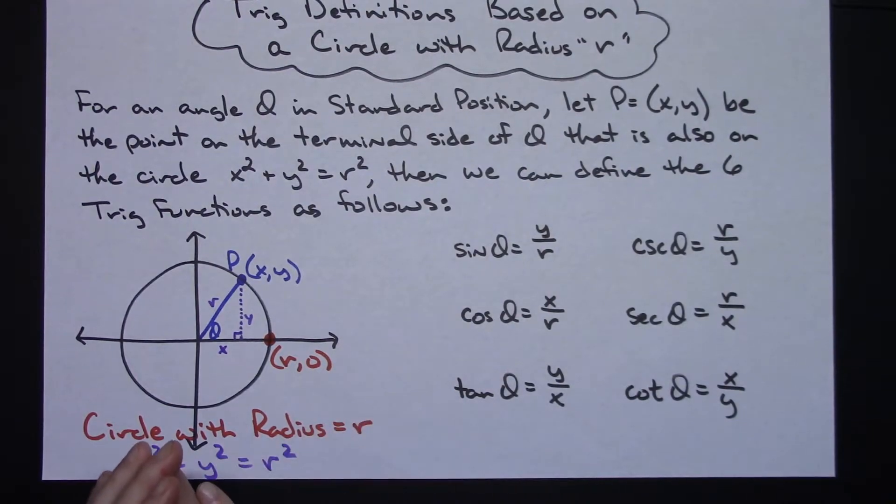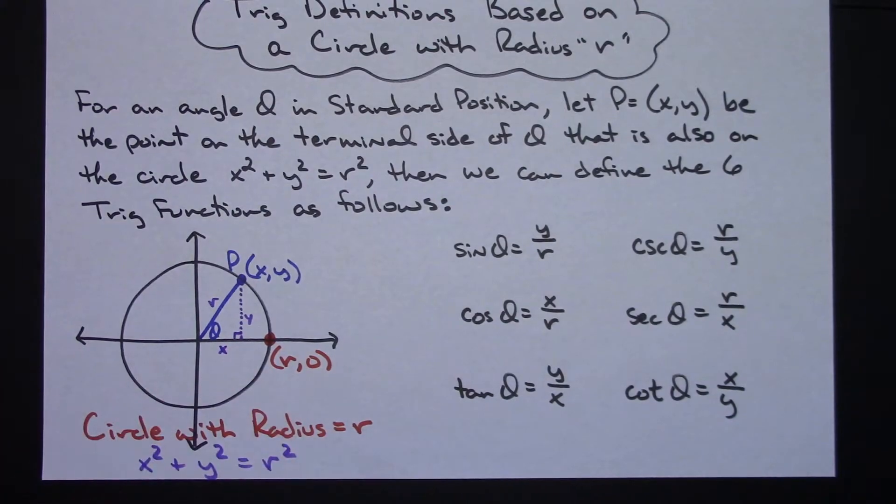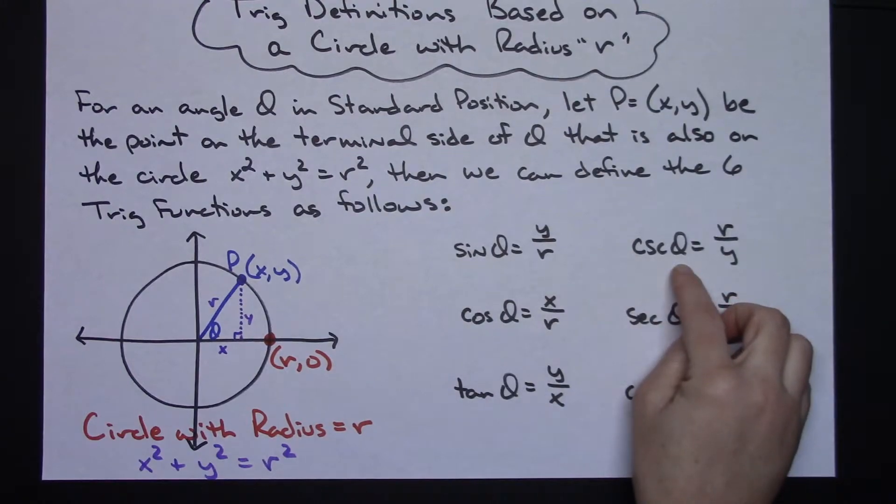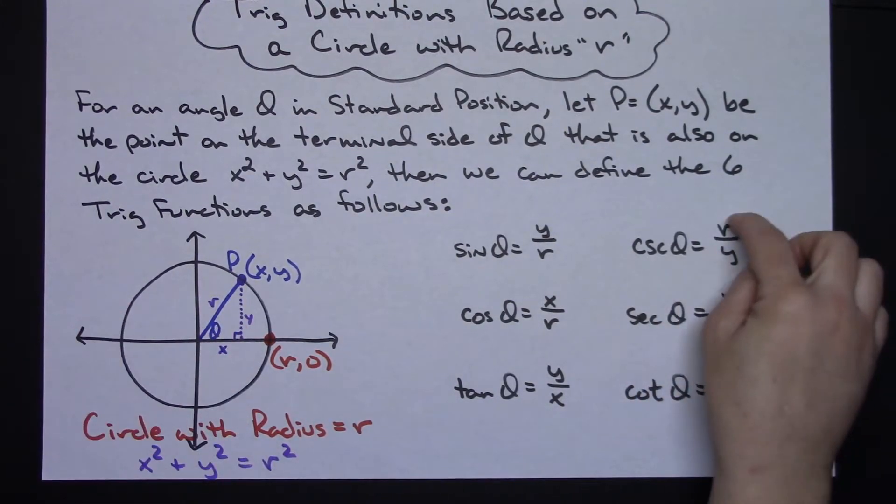These definitions also correspond to your right triangle trig, because we are using the right triangle in the inside this definition. So cosecant of theta is hypotenuse over opposite, hypotenuse over opposite.